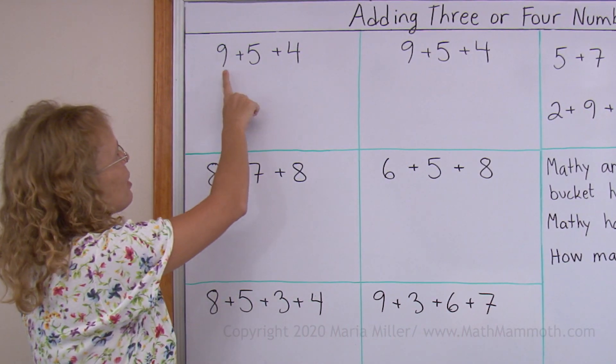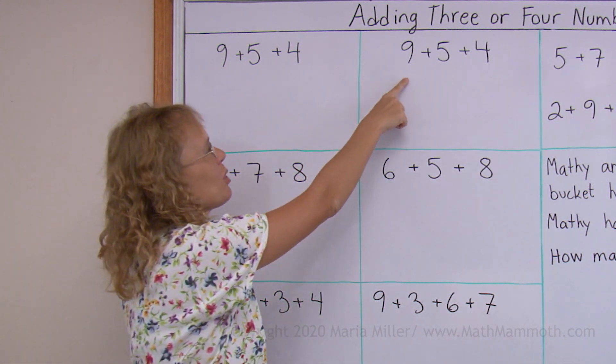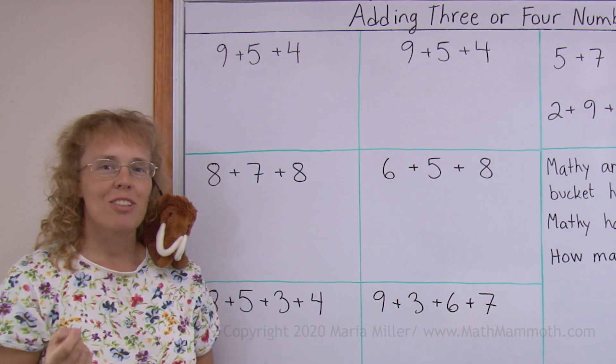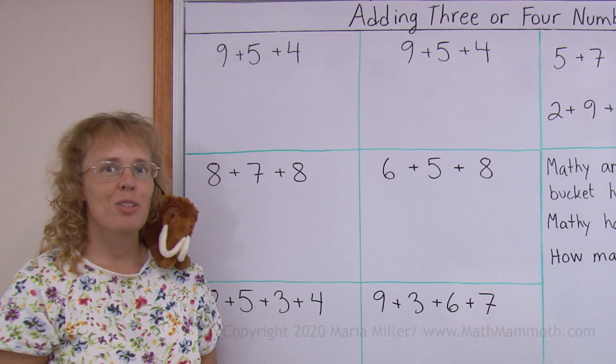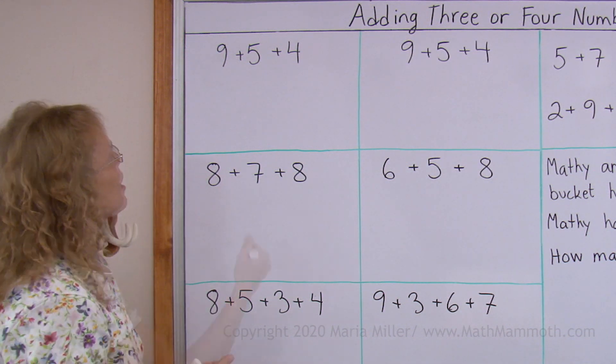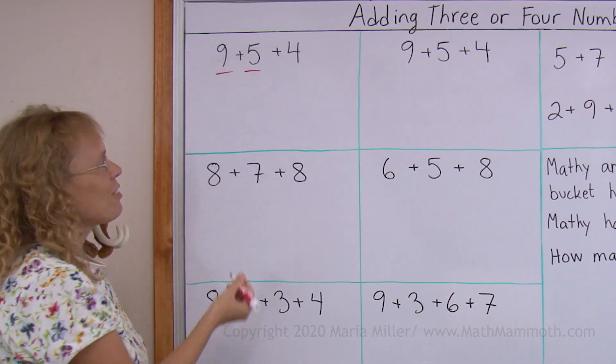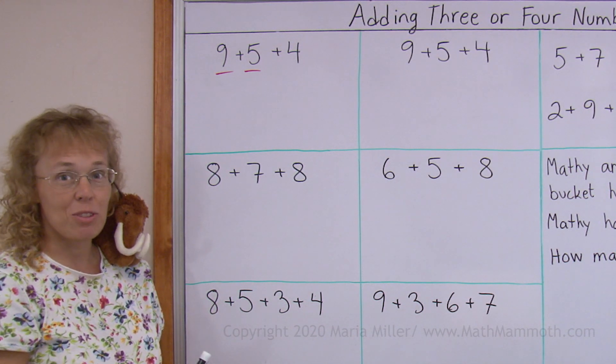For example, 9 plus 5 plus 4. And over here too. I'm going to show you that you can add the numbers in any order you wish. For example, if I add 9 and 5 first, 9 plus 5 is 14.